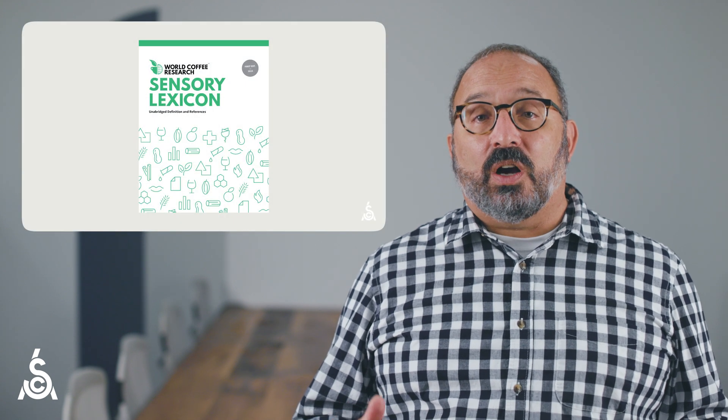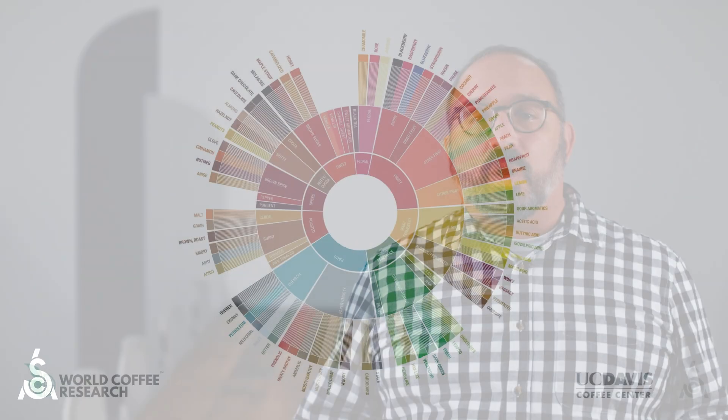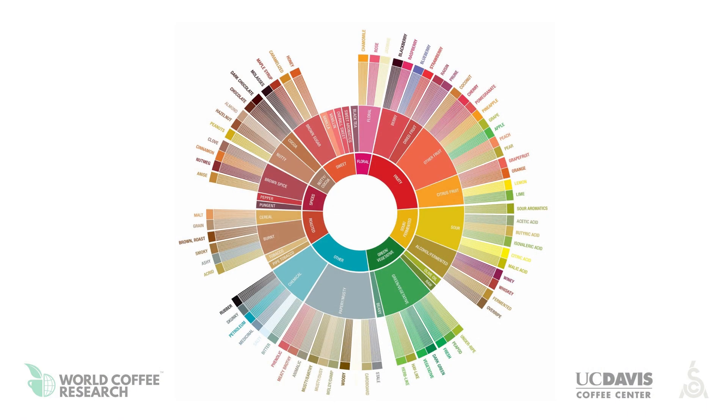This is an amazing piece of work and it will be the basis for lots of flavor investigation in the future — the WCR lexicon. This includes 110 flavor, aroma, and texture attributes in coffee, and literally sets a common vocabulary for us in the coffee trade. The lexicon descriptors were later integrated into a flavor wheel following joint work by WCR, SCA, and the University of California at Davis. Here is the final product: the SCA WCR Coffee Taster's Flavor Wheel.